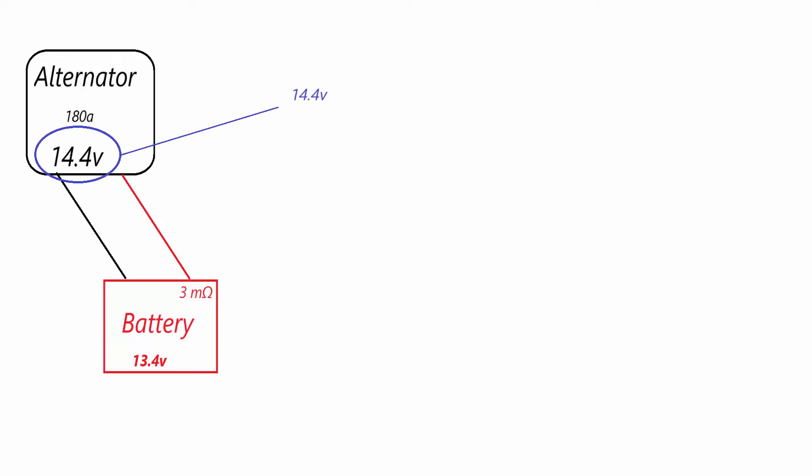First, we're going to take the voltage that our alternator outputs. In this example, it is 14.4 volts. Next, we will compare that to the resting voltage of our battery. In this case, we're basing it off of lithium iron phosphate, so we'll have a resting voltage of 13.4 volts. The math doesn't get much easier than this. It leaves us with a 1 volt difference between the alternator and the battery.